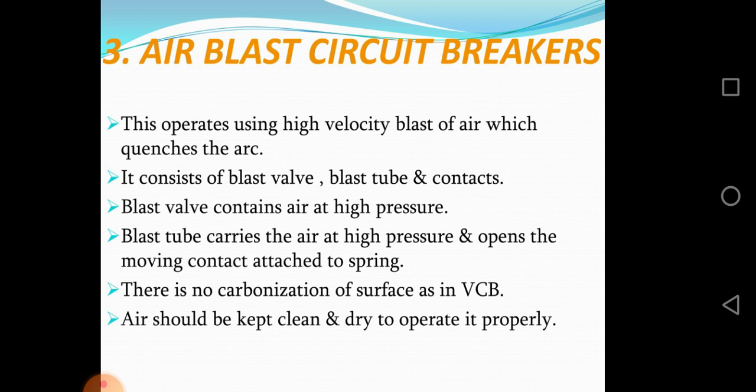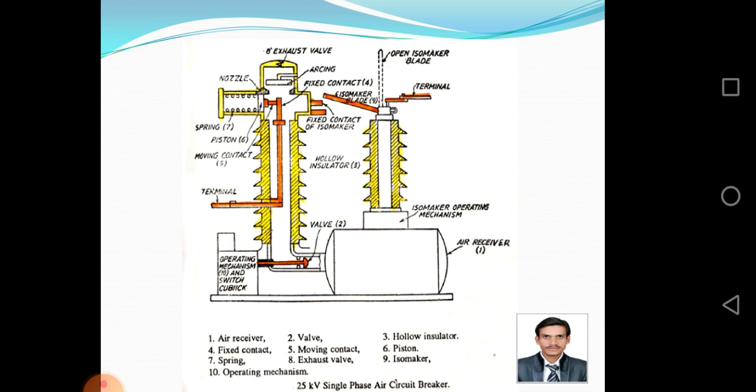Air should be kept clean and dry to operate it properly. Parts of the air blast circuit breaker include: air receiver bulb, hollow insulator, fixed contact, moving contact, piston, spring, exhaust bulb, ISO maker, and operating mechanism.